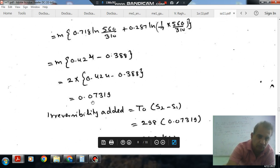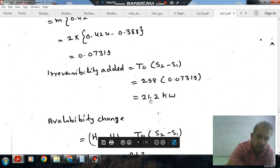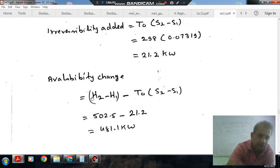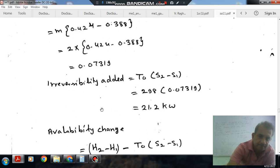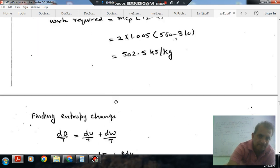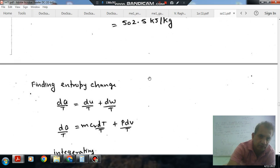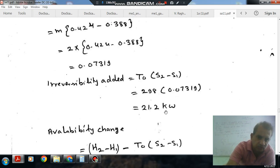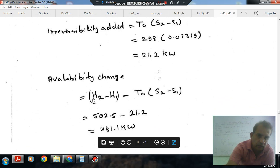And availability change is H2-H1 minus T0(S2-S1). So H2-H1 we have found out is 502.5. So availability transfer will be 481.1 kJ per kg.